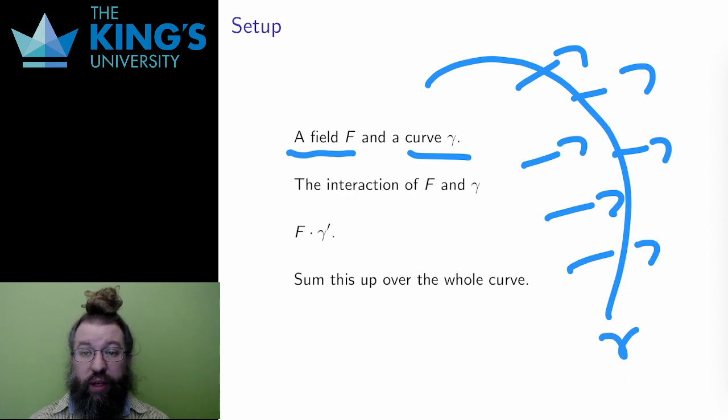If this field is, say, wind, this is an object moving through the wind, perhaps with the wind, perhaps against it, perhaps across it. If the field is force, then the path is an object moving through the force, again, possibly along with the force and possibly against the force.